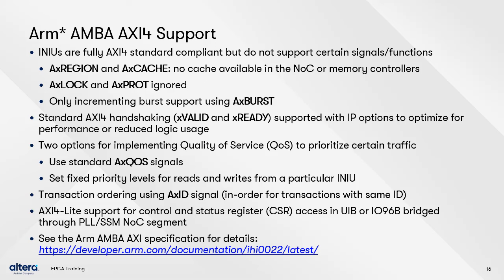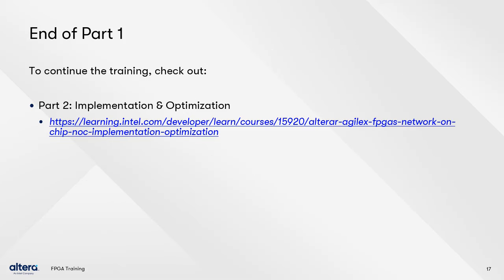The quality of service, or QoS, feature of the AXI-4 interface is supported as well. You can choose to implement QoS using the AXQoS signals that are part of the AXI-4 standard, or by setting fixed QoS levels for read and write operations to particular INIUs, ignoring the AXQoS signals. AXI-4 Lite interfaces are used for sideband access to the periphery for control and status register access to either type of memory interface, done through the PLL and SSM NOC segments. To learn about the AXI-4 standard and other resources available from Altera, see the AXI-4 specifications linked here.